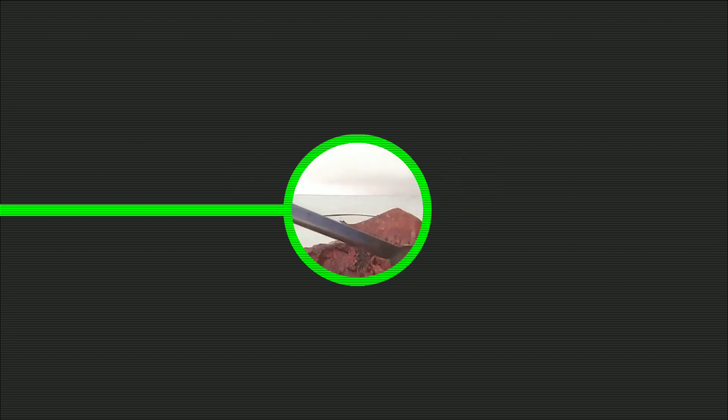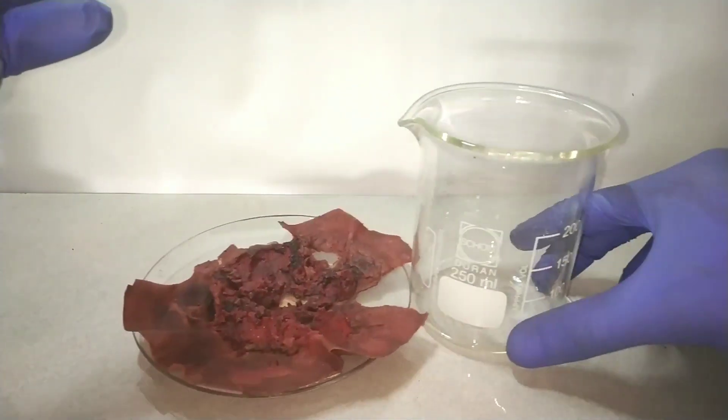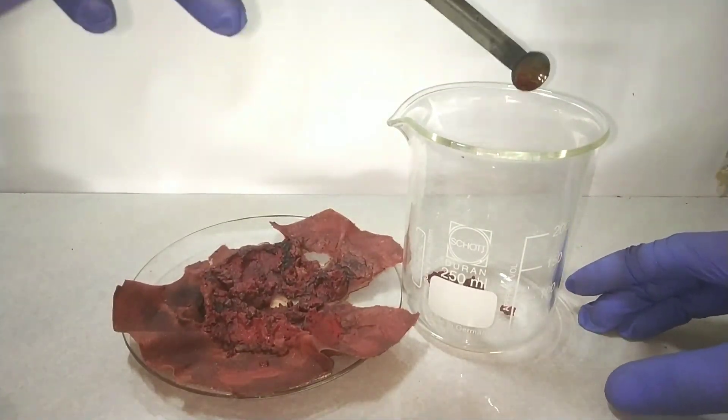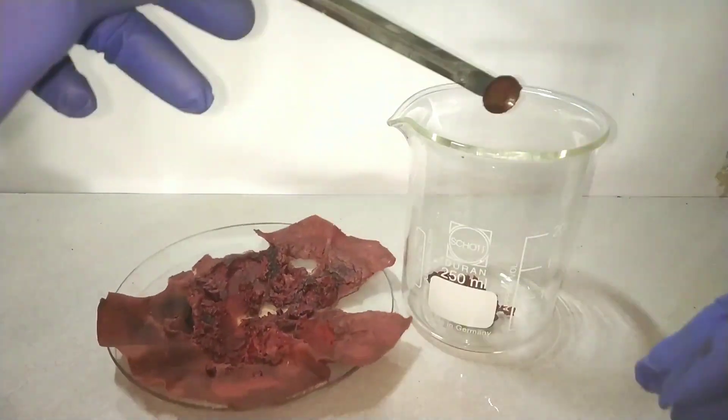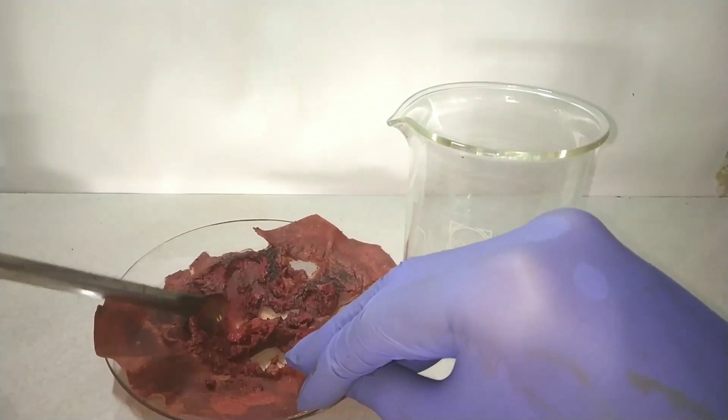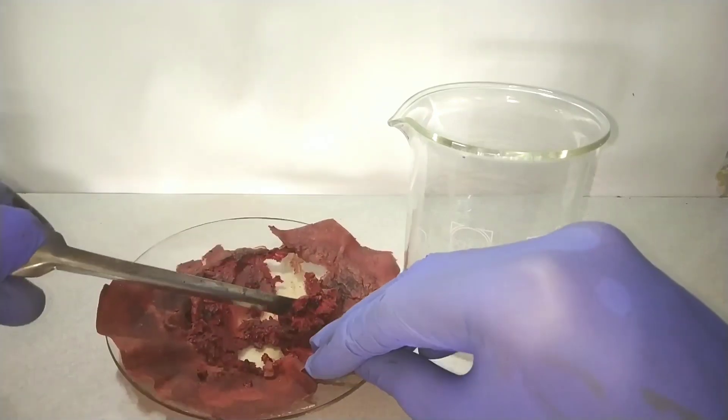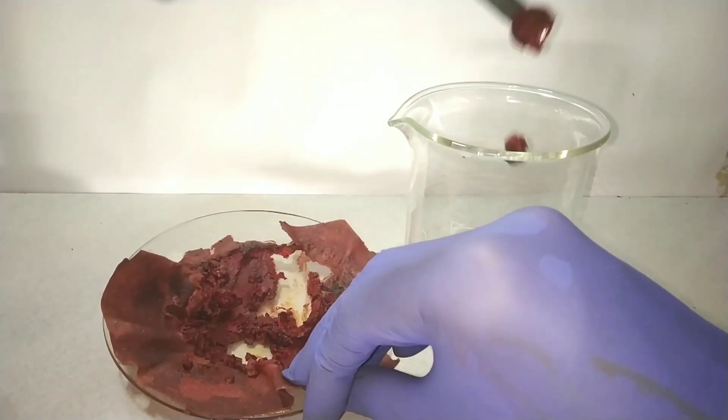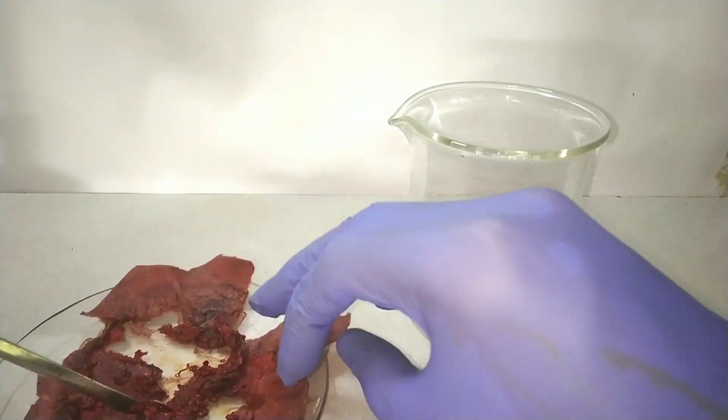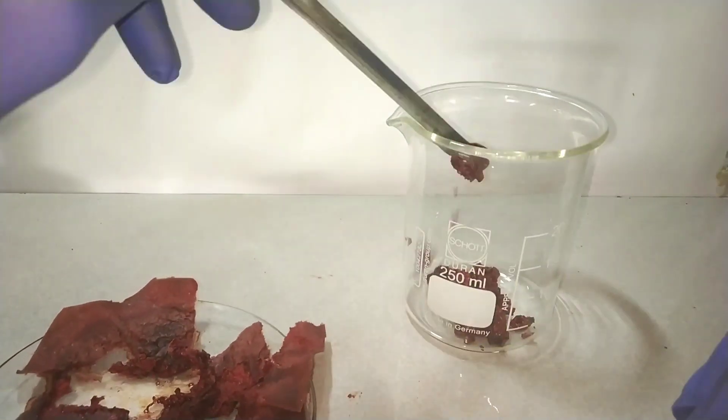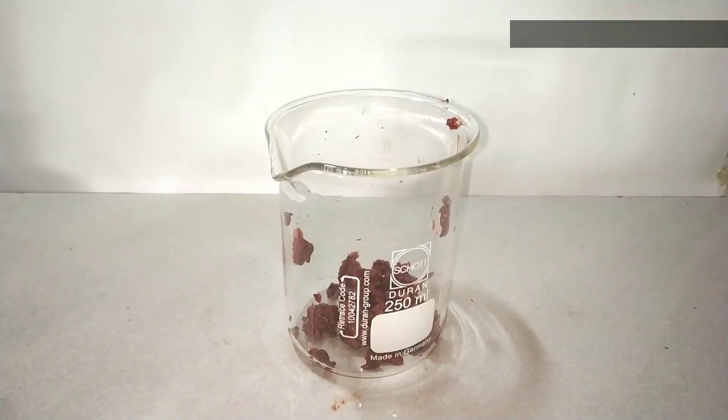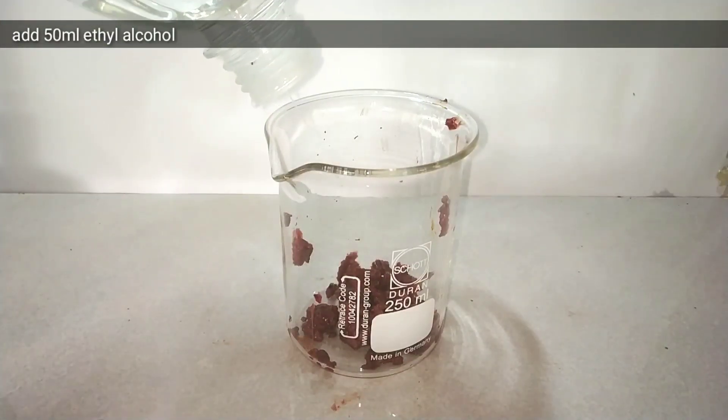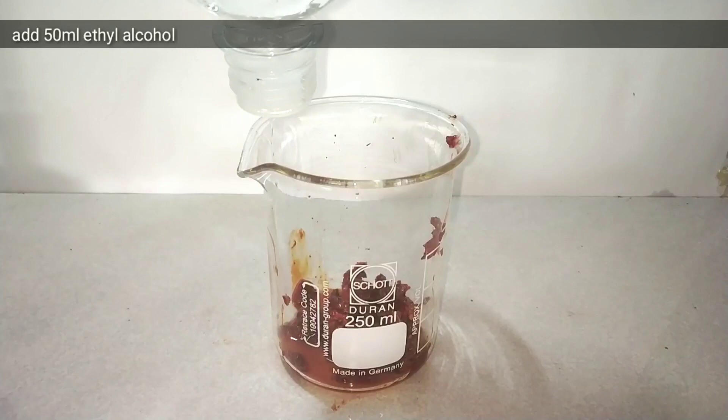After filtration I dried the crude product and now I am going to transfer this crude product into this 250 ml beaker on my right side. During this transfer you can see some filter paper bits are also being transferred into the beaker. But that is not a problem because in the next step I will be washing this with ethanol and the product will get dissolved in ethanol while the paper will not get dissolved in it.